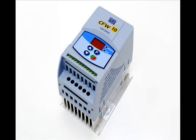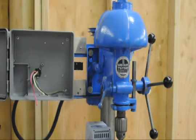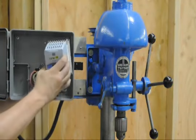Using the CFW 10 easy drive, you can power your three-phase motorized equipment from common household single-phase power. In addition to phase conversion, the CFW 10 easy drive also gives you the ability to precisely control the speed of your motor. For machines like our drill press here, that means no more annoying belt pulley changes when we want to change the speed of our bit.